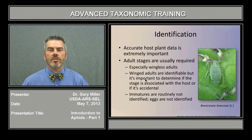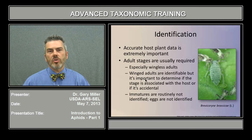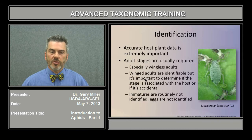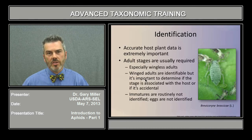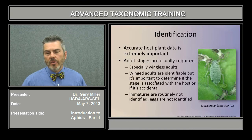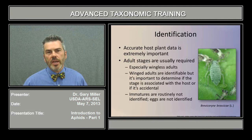Accurate host plant data is extremely important because some species of aphids are restricted to certain host plants, and some traditional keys use the host plant data to key species out. The adult stages are usually required, especially wingless adults. Winged adults can be identified, but it's important to determine whether that stage is actually associated with the host plant, or if it's incidental — a hitchhiker. Immatures are routinely not identified, and neither are eggs. Here's an example of a recently deposited egg from an oviparous adult female. Once first laid it's light colored, and through its development it will gradually turn darker.